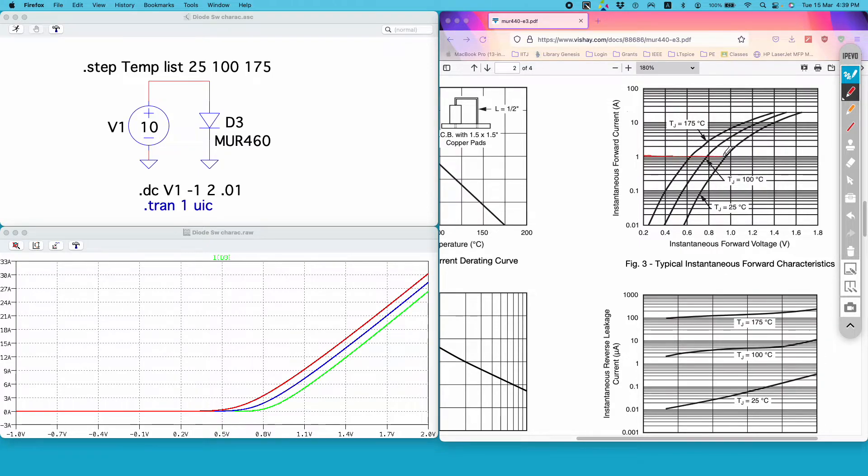At this current, as I am increasing the temperature, the forward voltage drop is decreasing. This one is for 25 degrees Celsius, this one is for 100 degrees Celsius, and this one is for 175 degrees Celsius.